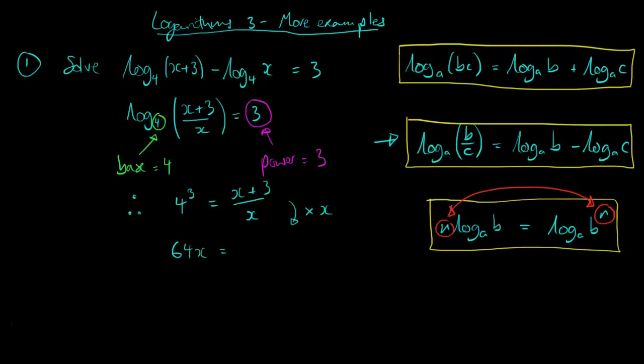So multiply by x and turn 4 cubed into 64, so 64x is x plus 3. Subtract the x, 63x equals 3, and then finally divide by 63, and simplify.